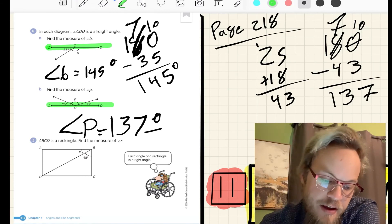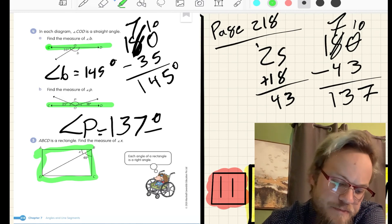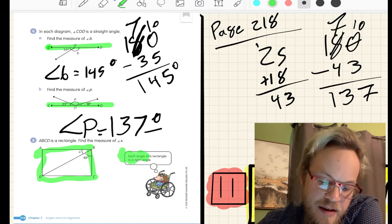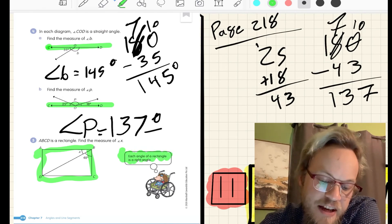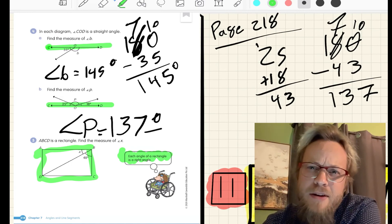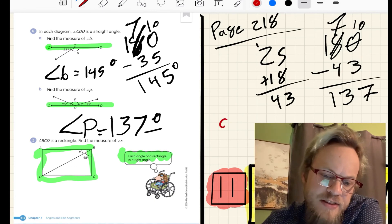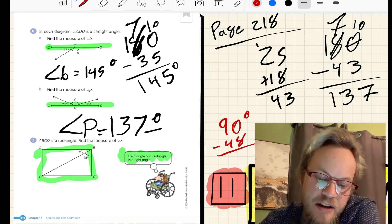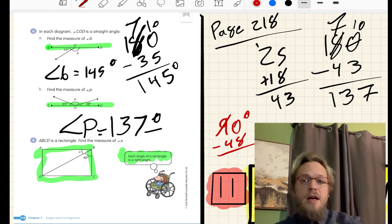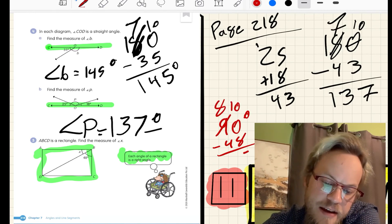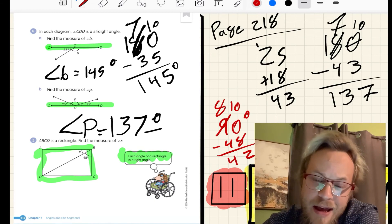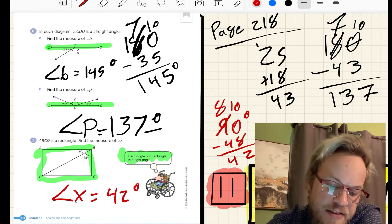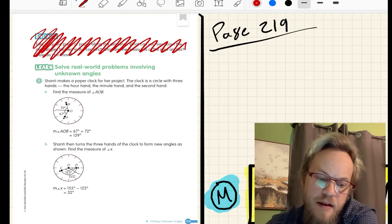Number 5. We have a rectangle, A, B, C, D. And we need to find the measure of angle X. Here, our hedgehog friend is reminding us that each angle of a rectangle is a right angle, and a right angle is 90 degrees. To solve this problem, I'm subtracting 90 degrees minus the 48 degrees that I know. I can't subtract from 0, so I regroup. That becomes 80, that becomes 10. 10 minus 8 is 2. 80 minus 40 is 40. Angle X equals 42 degrees.